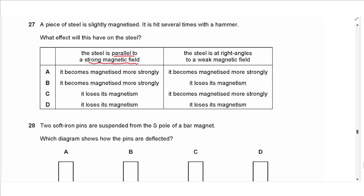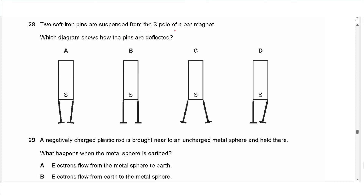Question 27 says: a piece of steel is lightly magnetized and hit several times with a hammer. What effect will this have? If steel is placed parallel to a strong magnetic field, hammering it helps it get magnetized more strongly. Placing it at right angles to the field causes the atoms to lose their orientation, so it loses its magnetism. The answer is B.